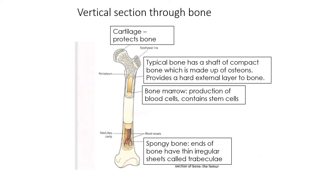For the exam you're going to need to know how to correctly label a bone. Here's a vertical section through the bone. At the top you can see cartilage, which is there to protect the bone — it's a tough film around the bone that helps prevent friction and the bones rubbing down. A typical bone has a shaft and a compact bone made of osteons, which provides a hard external layer.